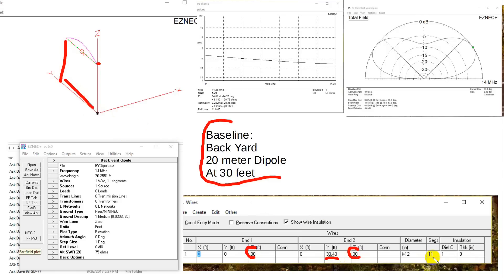And we have 11 segments on the thing. We note that it gives a 2 to 1 SWR in the phone portion of the band. We could adjust that a little bit by making the antenna slightly longer. But we've got a very nice dipole elevation pattern here. So this is our baseline.